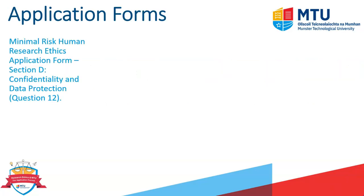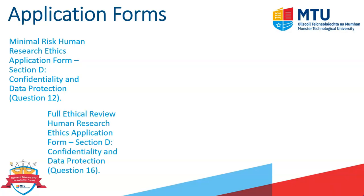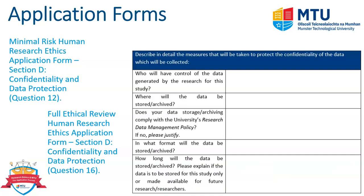In the application form — specifically question 12 of the minimal risk human research ethics application form and question 16 of the full ethical review human research ethics application form — you're asked to provide information on how you'll protect the confidentiality of participants and the personal data obtained. This includes briefly stating who will control the data, and where the data will be stored or archived, such as on a password-protected laptop or in the cloud. You should also indicate whether your data storage aligns with the university's research data management policy, which requires data to be FAIR: Findable, Accessible, Interoperable, and Reusable.